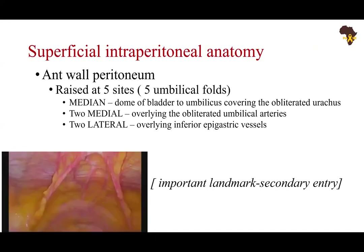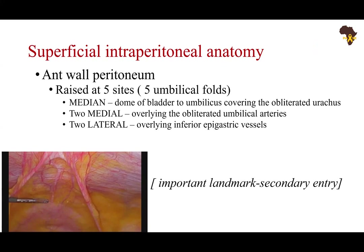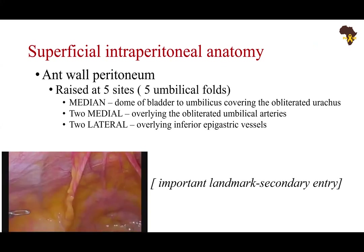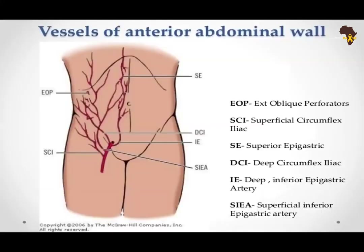Now into the peritoneum — the anterior abdominal wall. We have the anterior peritoneal folds in five lines: the median, which is the dome of the bladder to the umbilicus covering the obliterated urachus; two medial folds — the obliterated umbilical arteries, a continuation of the internal iliac artery's anterior trunk; and two lateral folds overlying the inferior epigastric vessels, an important landmark for secondary entry. The most important vessel of the anterior abdominal wall is the deep inferior epigastric artery, a branch of the external iliac artery after it exits the pelvis. It comes back up and goes under the rectus muscle and cannot be transilluminated.